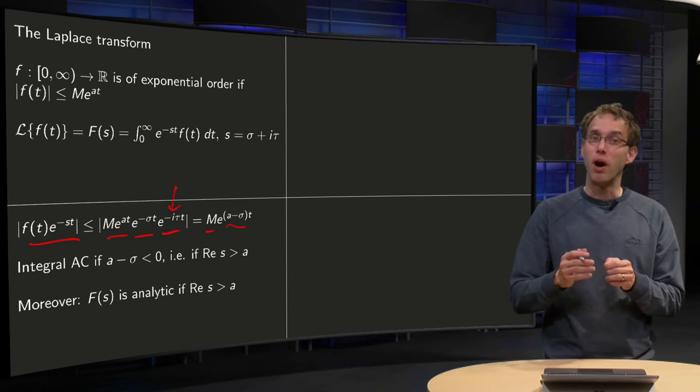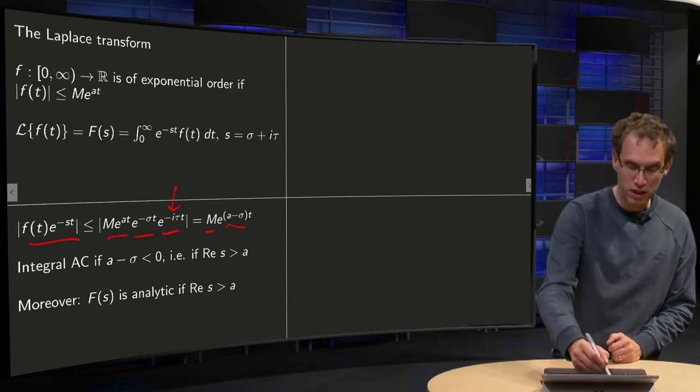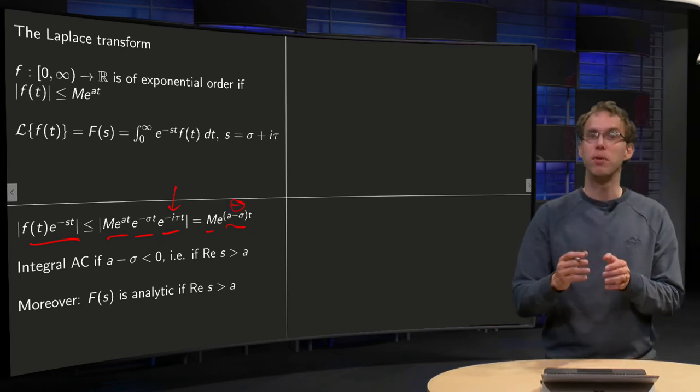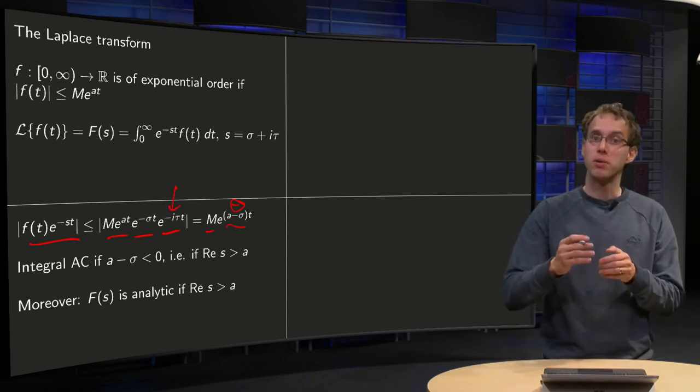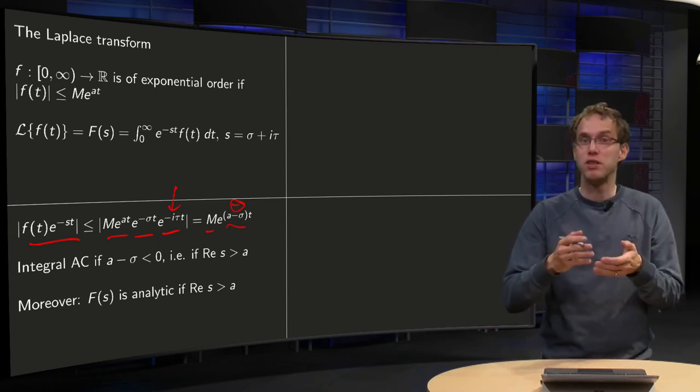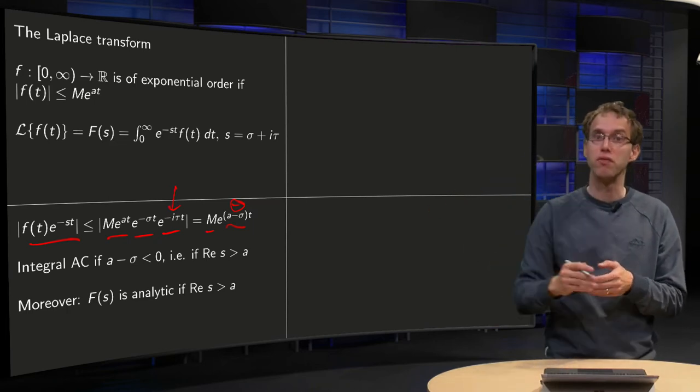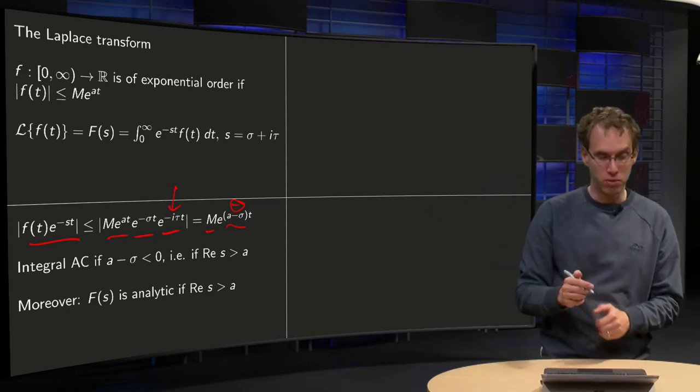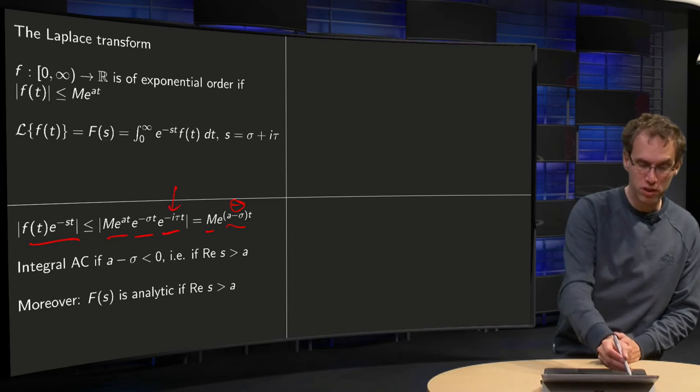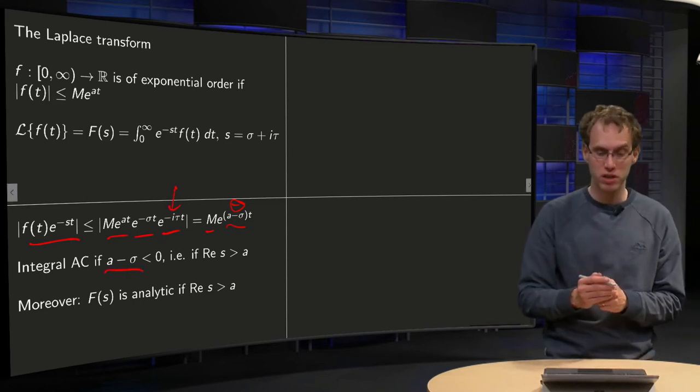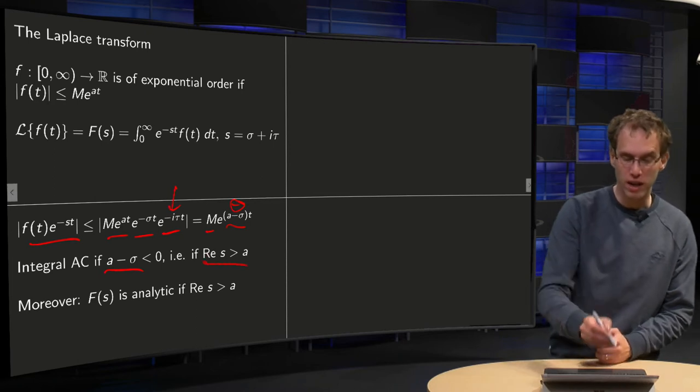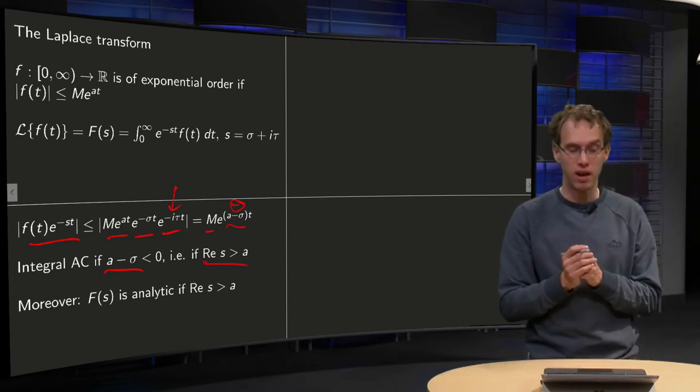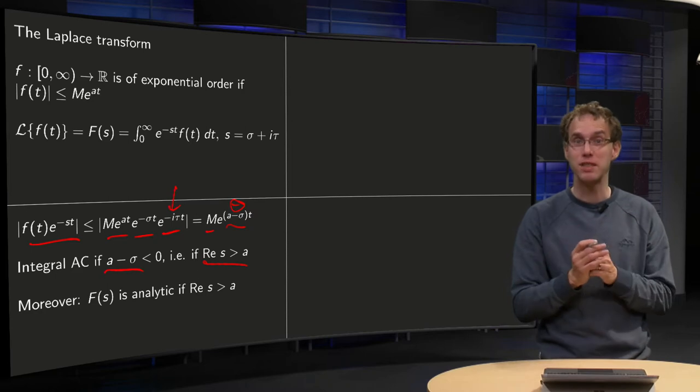Well, when can you integrate this? Well, only if this a minus σ is a negative number, because then the total integrand is below something which behaves like e^(-t), so it falls off. And then you can integrate this of course, because absolute convergence if your a minus σ is smaller than 0, so that means that your σ has to be bigger than a, so your real part of s is bigger than a.